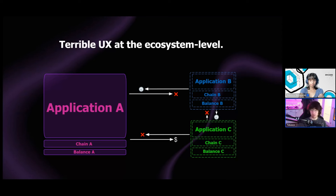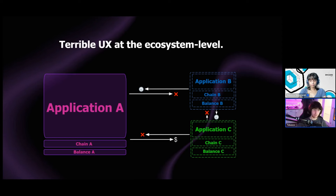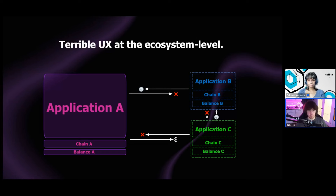For example: if I'm on application A on chain A with balance A, and there's another application on chain B that I want to use — that application has a totally different balance B because it's on a different chain with different account state. So now I need to bridge. As a user, I need to go find a bridge, use it, and now I'm out 20 minutes. If there's a third application on chain C, I go through the process again — and the bridge might not be available, or it's slow, or expensive. At the end of this whole process, I'm cognitively managing three different balances across three different chains, importing different networks, using different RPCs. This is a horrible user experience that we can never expect to be adopted on a wide scale.